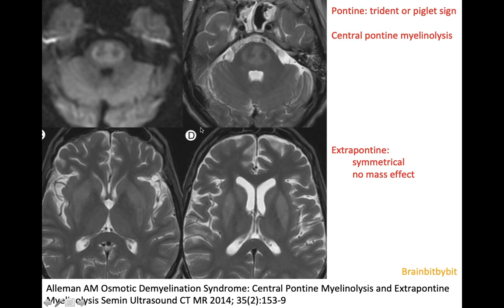There is also often extrapontineinvolvement with symmetrical hyperintensity without mass effect of the basal ganglia, lateral geniculate nucleus of the thalamus, and the cerebral white matter. The combined supratentorial and infratentorial involvement is highly specific and pathognomonic for osmotic demyelination syndrome, as it is called nowadays.